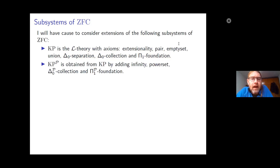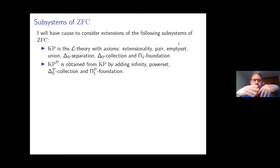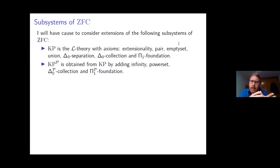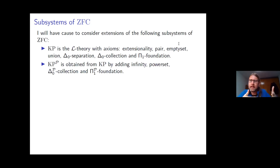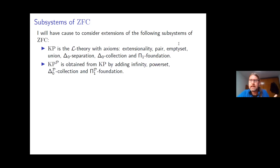KPP is obtained from KP by adding infinity, power set, Δ₀ᴾ collection, and Π₁ᴾ foundation. The idea is that KPP is the L-theory such that if you take a model of KPP and expand the language to include the power set operation, the model would satisfy all analogues of the KP axioms in the expanded language. So KPP facilitates σ₁ recursions involving the power set operation, in the same way KP facilitates σ₁ recursions.